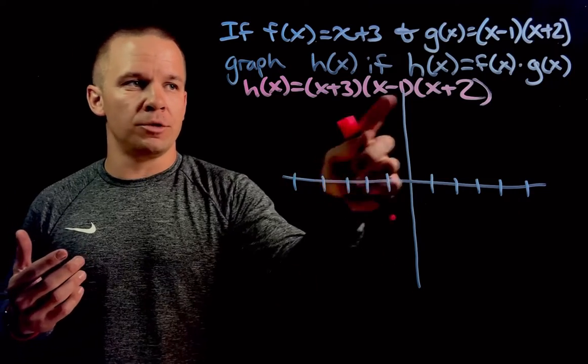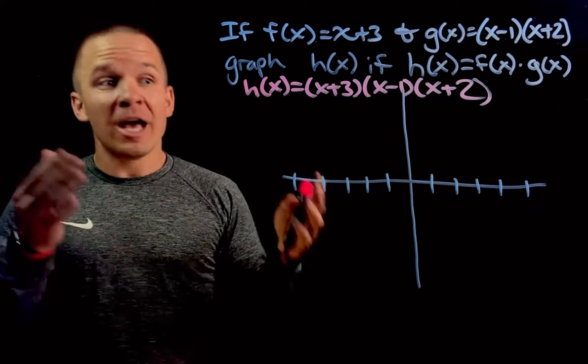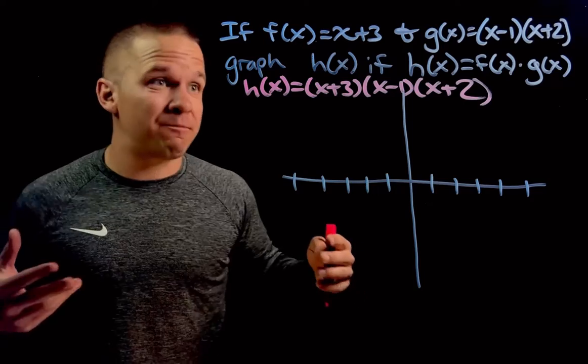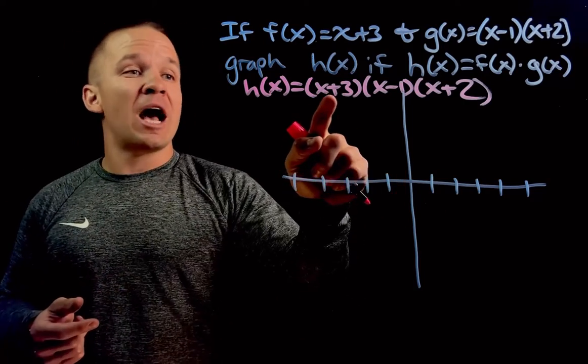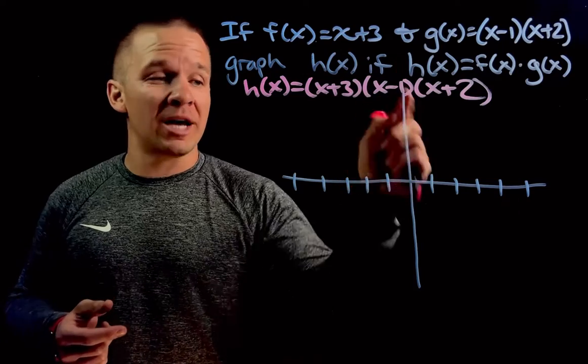I just have myself a 1, 2, 3 cubic polynomial in factored form. The easiest way to graph polynomials is in factored form because what do I get? My x intercepts. I get negative 3 comma 0, 1 comma 0, and negative 2 comma 0.